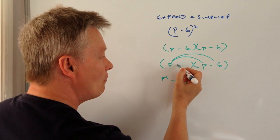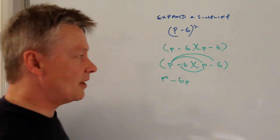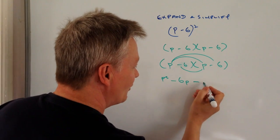Now I need to multiply through by minus 6. So if I do that I've got minus 6 times p is going to be minus 6p.